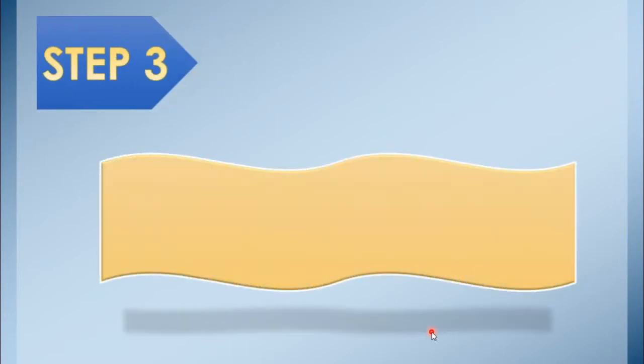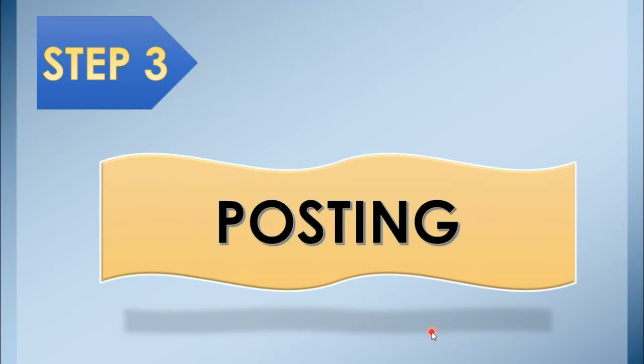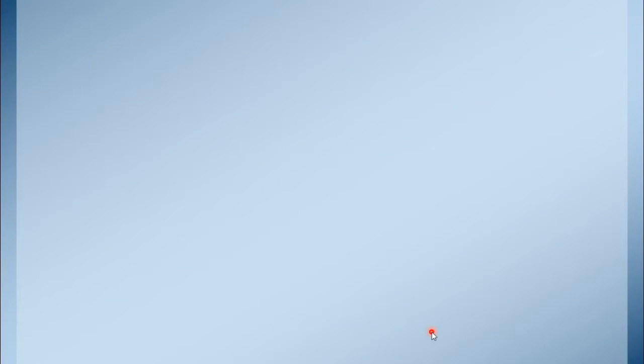Now, are you ready to take the third and fourth steps? Let's begin. Step three is all about posting. Posting to where? Your Facebook, Twitter, or Instagram accounts? Of course, no. All our journal entries are to be posted to the ledger. But before that, let us familiarize ourselves with a chart of accounts.